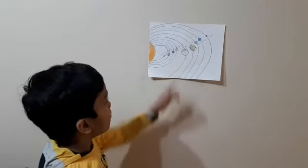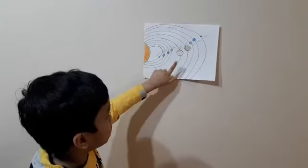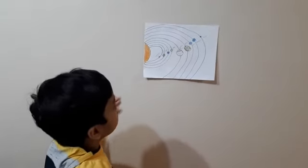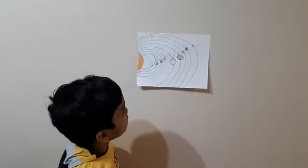Mars is the red planet from the sun. Jupiter is the largest planet in the solar system.